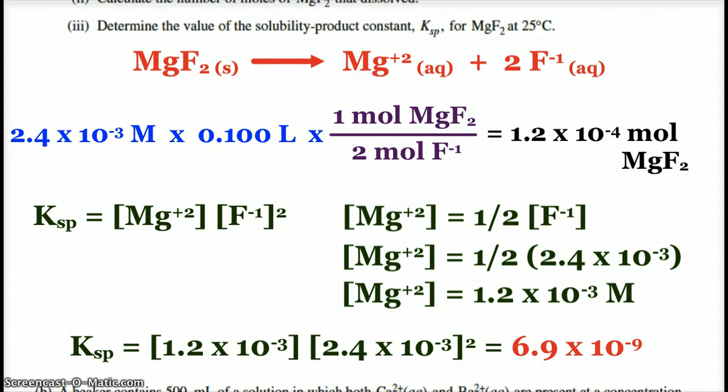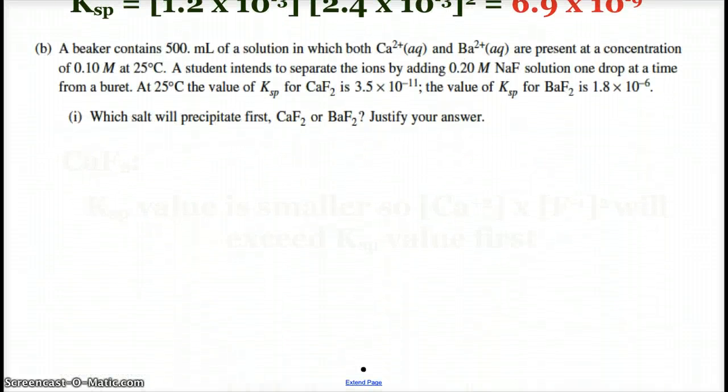All right, now this next part is going to be, we've got a mixture and we've got both of the ions, calcium and barium, present in the mixture. So we've got 500 mils of a solution, and both the calcium and barium ions are at a concentration of 0.1 molar. So a student is going to separate the ions by adding sodium fluoride. And so that fluoride ion will then cause precipitation of calcium fluoride and barium fluoride. This is one of those fractional precipitation techniques. And so we see our Ksp values. Calcium fluoride, 3.5 times 10 to the negative 11th. Barium fluoride, 1.8 times 10 to the negative 6th. So the first question is, which salt is going to precipitate first?